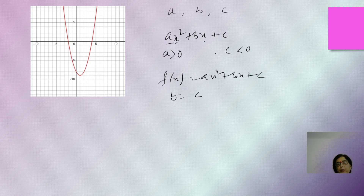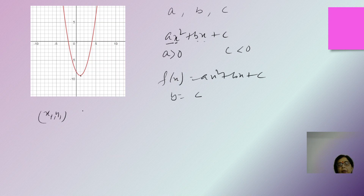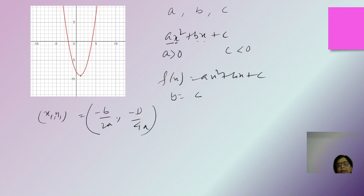Coming to b, which is the most crucial. The vertex of the parabola has coordinates (-b/2a, -D/4a). This formula applies in whichever quadrant the vertex lies. The x-coordinate -b/2a helps us decide the sign of b. The same rule applies for the vertex in any quadrant.